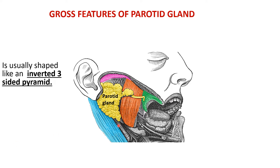The shape of the parotid gland resembles an inverted three-sided pyramid. It is inverted because the apex of this pyramidal structure is directed downwards, while the base is directed upwards. It has three surfaces: one placed laterally and two on the medial aspect.